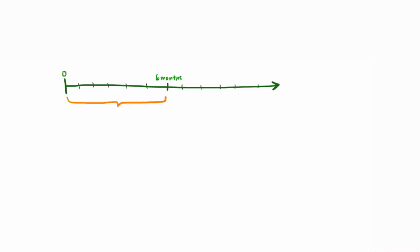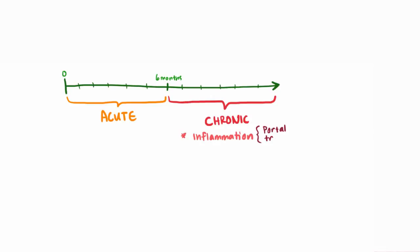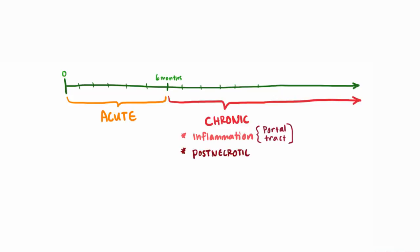If symptoms continue or the virus sticks around for more than 6 months, viral hepatitis goes from being acute to being chronic hepatitis. At this point, inflammation mostly happens in the portal tract, and if inflammation and fibrosis keep happening, we consider that a pretty bad sign, since it might be progressing to post-necrotic cirrhosis.